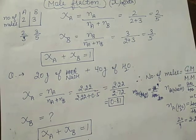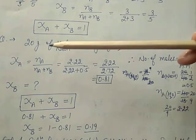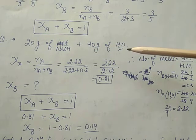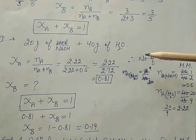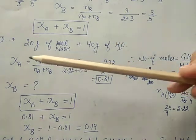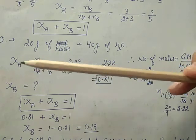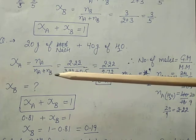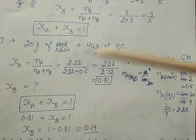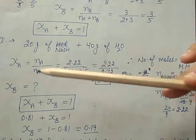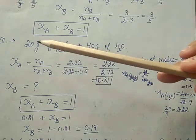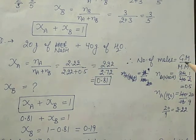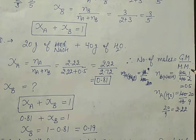Now we take a question: 20 gram of NaOH dissolved in 40 gram of H2O — calculate the mole fraction of A and B. Apply the formula: zeta A equals number of moles of A divided by number of moles of both components. First, calculate the number of moles since mass is given but moles are not. Number of moles equals given mass divided by molar mass.